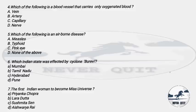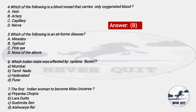Question 4: Which of the following is a blood vessel that carries only oxygenated blood? Options: A) Vein, B) Artery, C) Capillary, D) Nerve. The right answer is option B — Arteries carry only oxygenated blood.